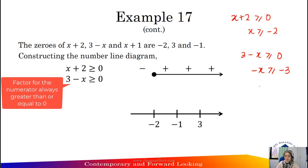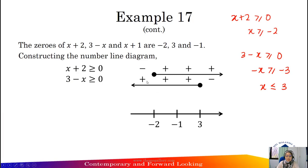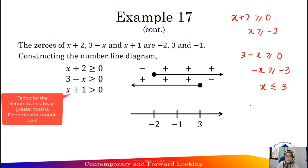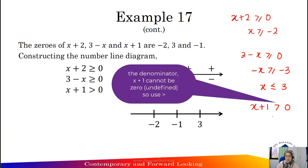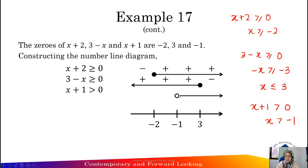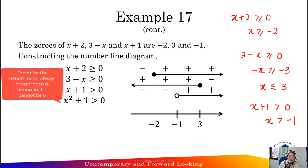For 3 - x greater than or equal to 0: negative x equals negative 3, so x less than or equal to 3, towards negative infinity — positive, positive, positive, negative. For x + 1 greater than 0 (denominator cannot be 0, so greater than only): x greater than negative 1, open circle to positive infinity — negative, negative, positive, positive.